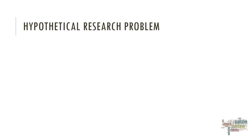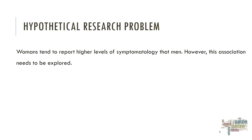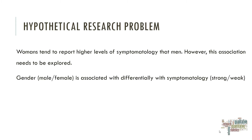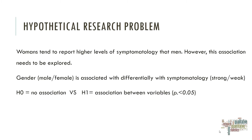Now let's look at another hypothetical research problem, made for educational purposes only, to illustrate how we can apply the Chi-Square test in SPSS. Women seem to report higher levels of symptomatology than men; however, this association needs to be explored. Gender is associated differentially with symptomatology. We have two levels for each variable: Gender (male, female) and Symptomatology (strong, weak). Our null hypothesis is that there is no association. Our alternative hypothesis (H1) is that we find some association between the variables.